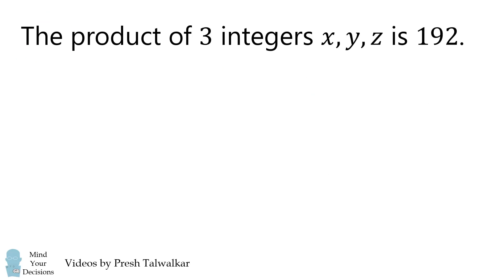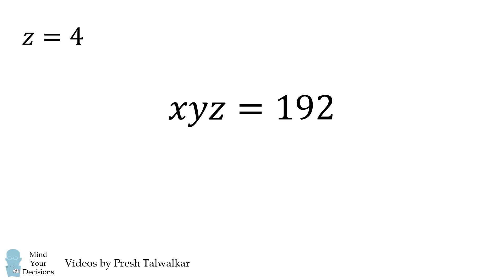We'll solve this problem step by step. First X times Y times Z is equal to 192. Then Z is equal to 4. We substitute and then divide both sides by 4. This means X times Y is equal to 48.